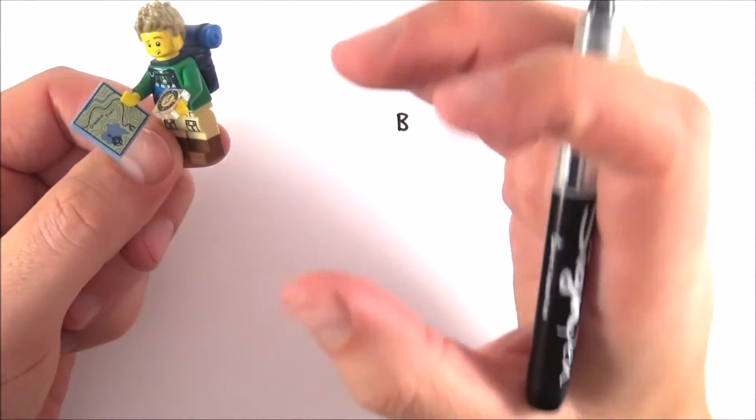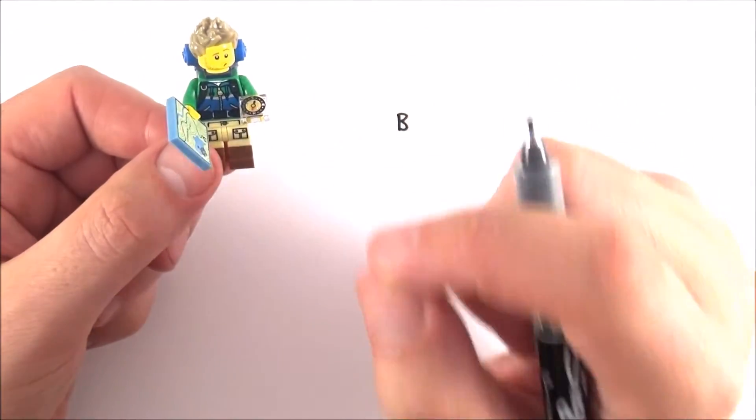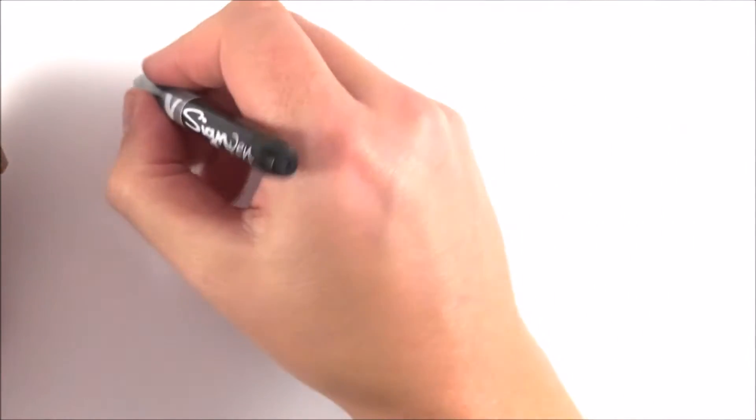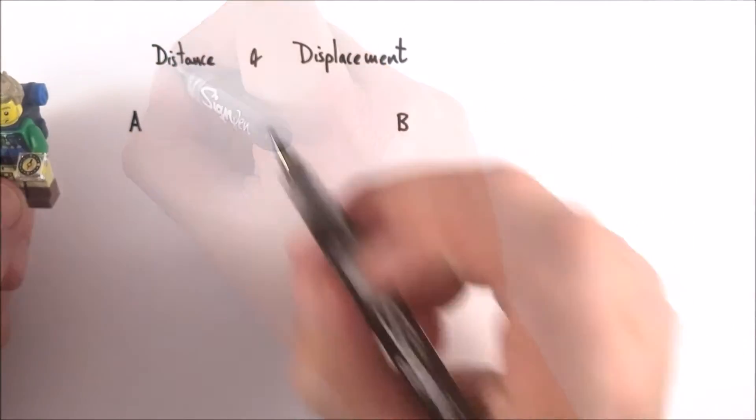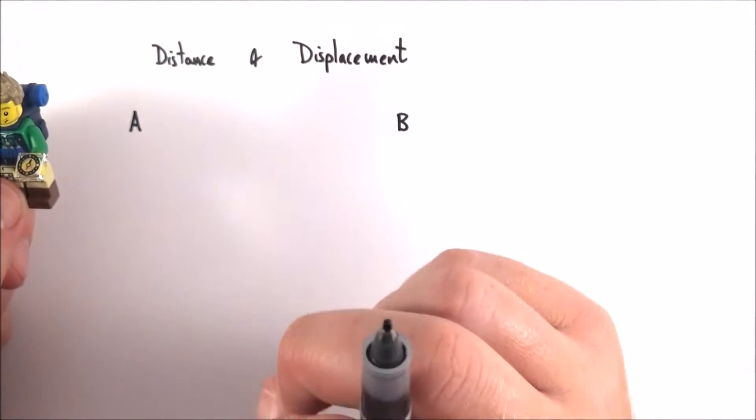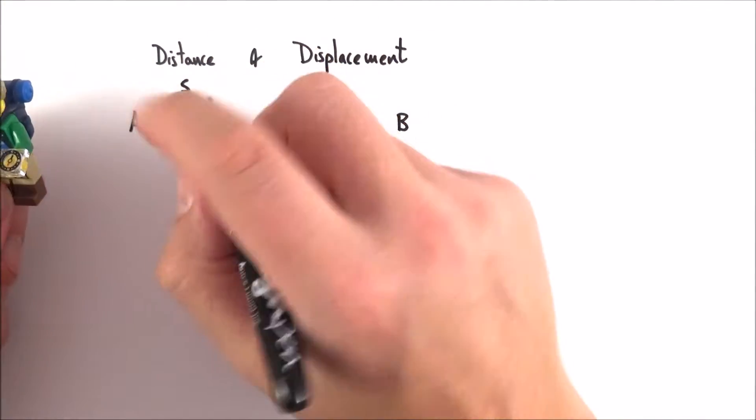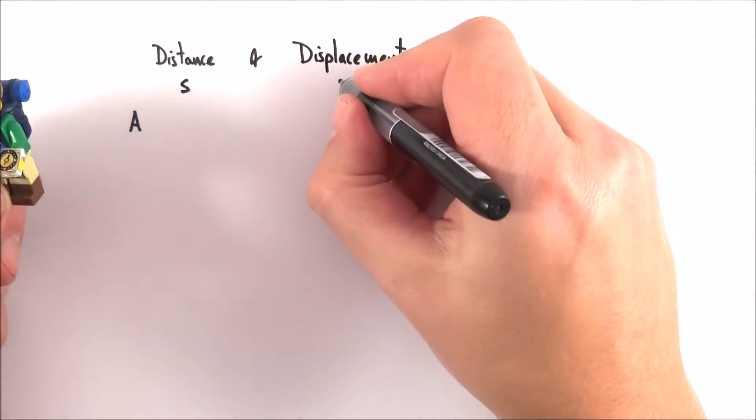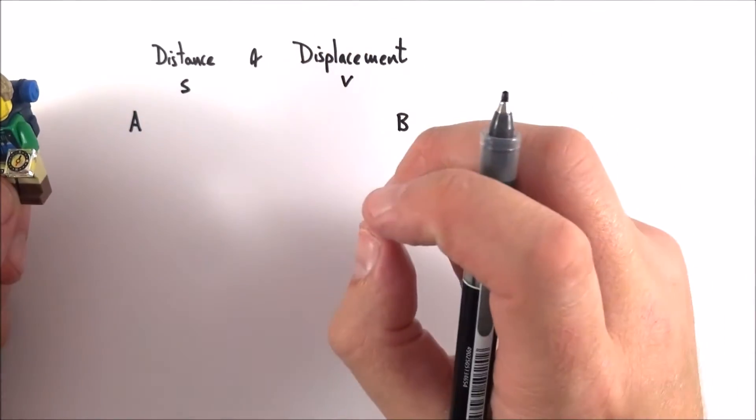And this video is really looking at two things, distance and displacement. Now these are really similar but there is a subtle difference between them and it's because distance is a scalar quantity whereas displacement is a vector and that's really important.